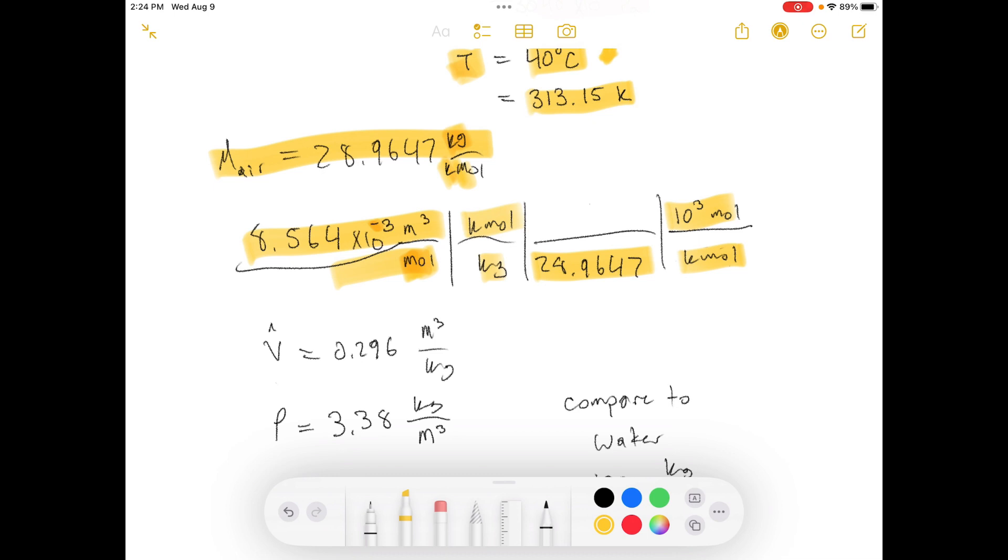So you multiply all that out and you get 0.296 meters cubed per kilogram. This is the specific volume.